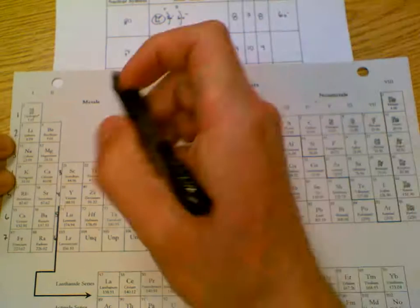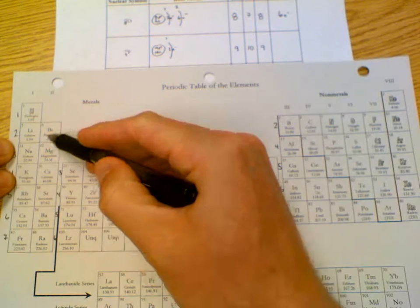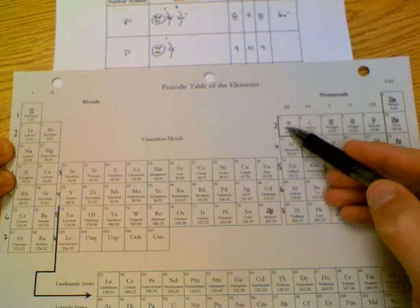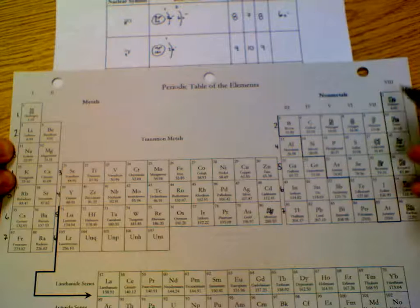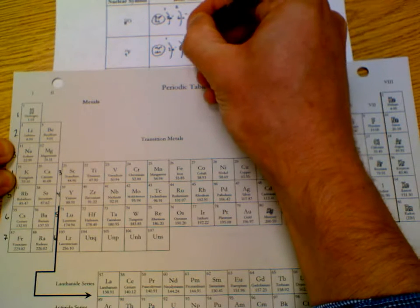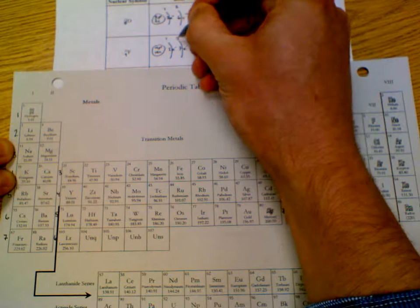There are two electrons in energy level one. Can't go any further right. So back to the left. Energy level two. One. Two. Cross the divide. Still energy level two. Three. Four. Five. Six. Seven.